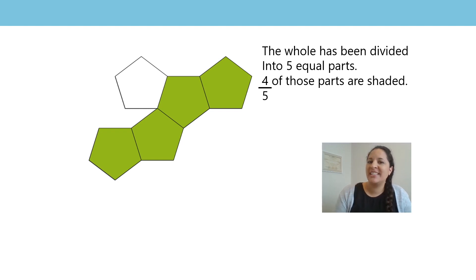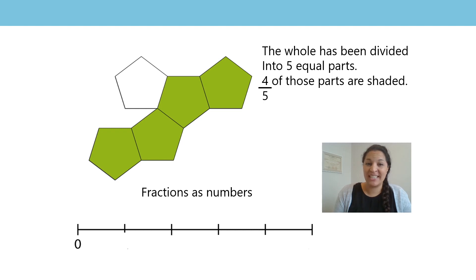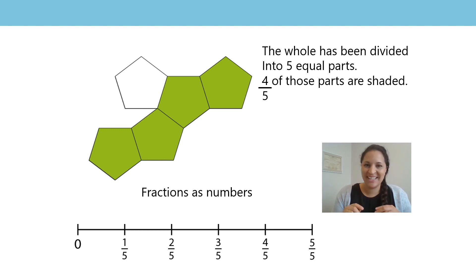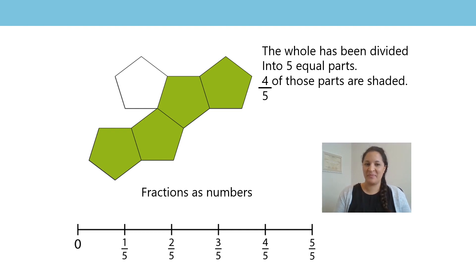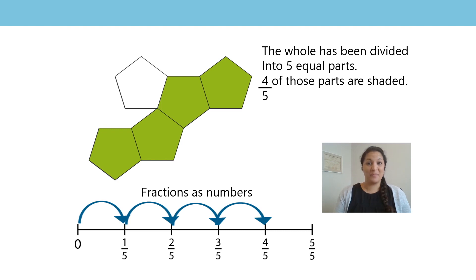Now shall we have a go at writing our fraction as a number on a number line? Our number line has been divided into five equal parts, so let's count up the equal parts: one one-fifth, two one-fifths, three one-fifths, four one-fifths, and five one-fifths. Now we're going to count on the number line starting at zero and stop at the number that matches our fraction. Zero, one one-fifth, two one-fifths, three one-fifths, four one-fifths. That's it! Did you stop at the right point? We can write this fraction as a number as four-fifths.